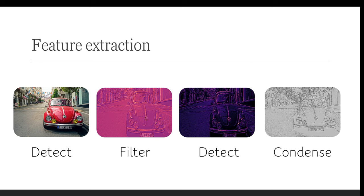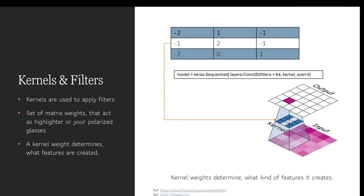First of all, a base layer has three main steps that you need to understand: a filter, detect and condense.